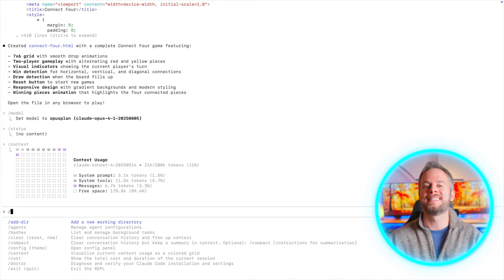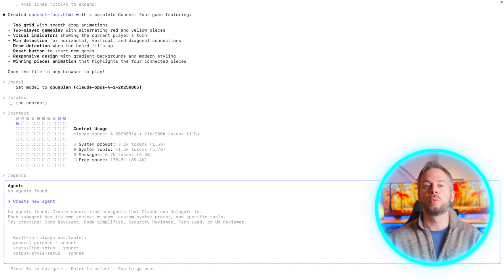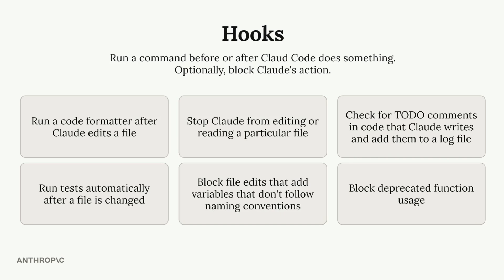For larger projects you can go further by creating sub-agents — these are like mini-Claudes with their own context and job description. One might be a dedicated code reviewer, another a test runner. Each one has its own system prompt and permissions, and you can call them in when needed, keeping the main session clean. Alongside that, hooks let you automate guardrails — for example, configuring Claude to automatically run a linter after any file edit or to block certain shell commands unless you explicitly override. I use memory, slash commands and sub-agents very regularly.